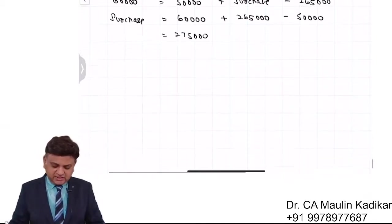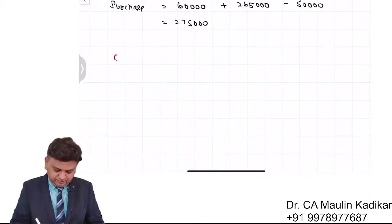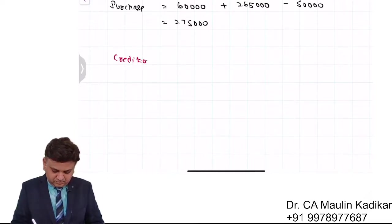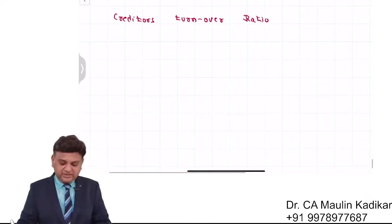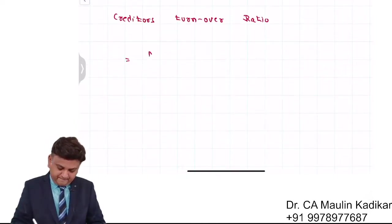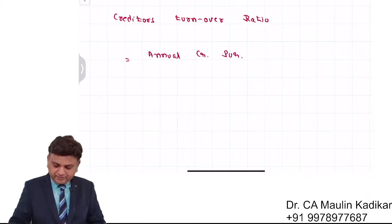Next is creditors turnover ratio. It will be found like this: annual credit purchase divided by average creditors.